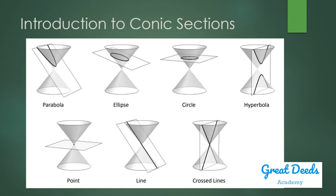Or imagine the cone resting on a table, and your cutting plane intersects it perpendicularly and meets the cone right there at the joint between the two cones. What you will form here are two intersecting lines. So these are the three degenerate cases of your conic sections: a point, a line, and two intersecting lines.